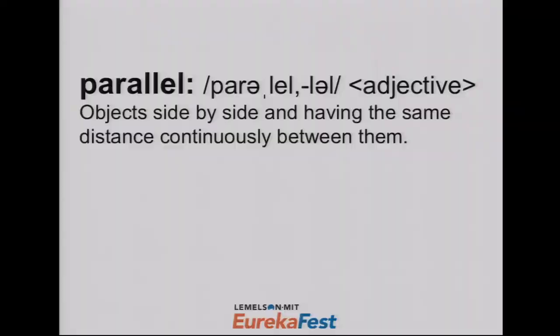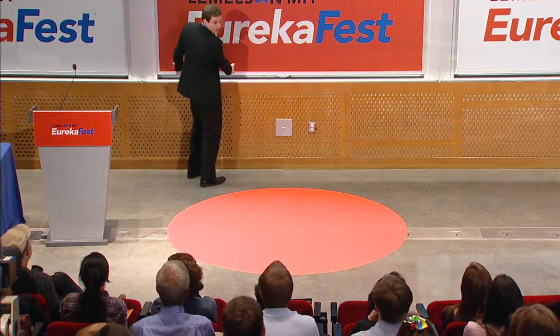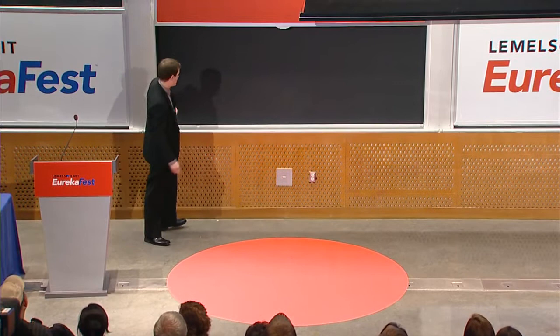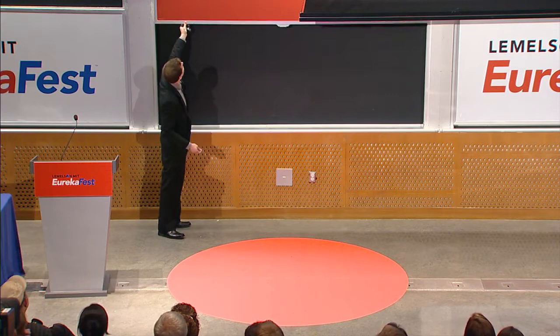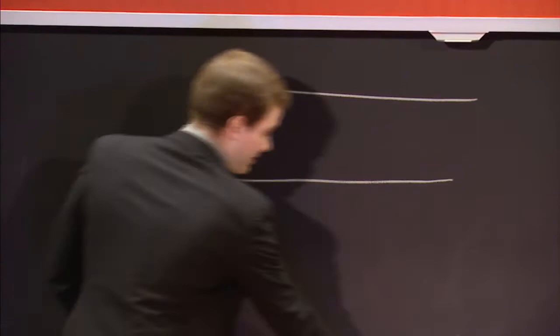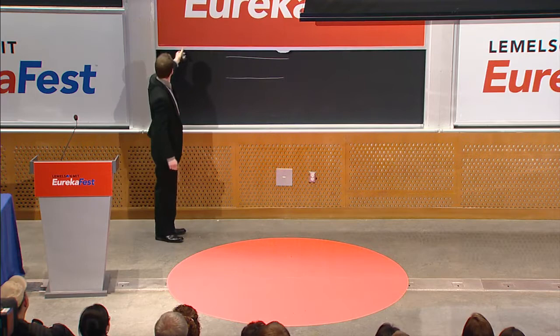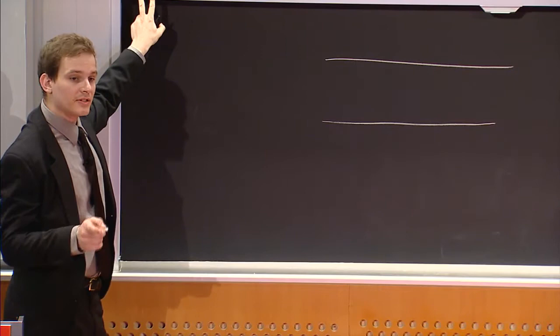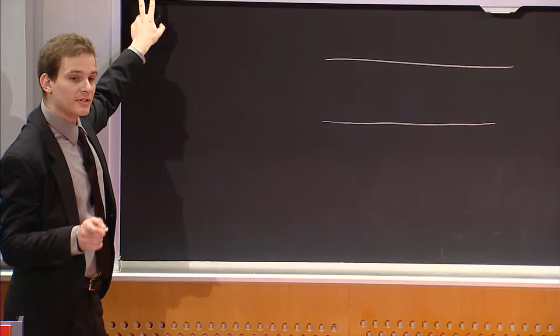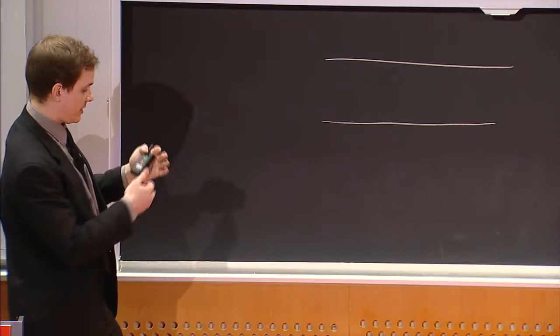So what does parallel mean? There are a few definitions. The first: an object side by side, having the same distance continuously between them — so these are parallel lines. Pretty straightforward stuff, you probably know what that means already.